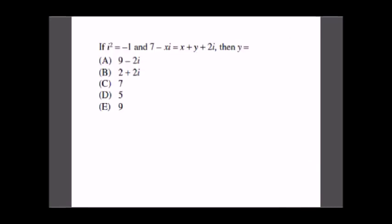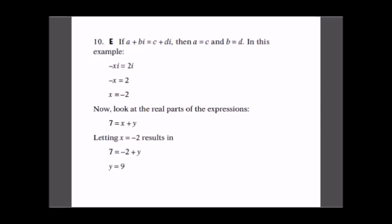Question is: if i² is equal to -1 and 7 - xi is equal to x + y + 2i, then y is equal to? We have options A, B, C, D, and E. Let's go straight away to the solution.